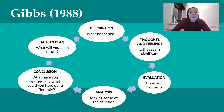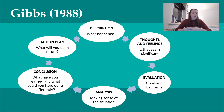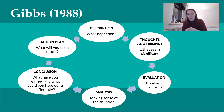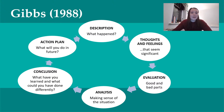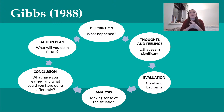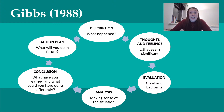Then you come on to evaluation: thinking about the good parts and the bad parts, what went well and what could be improved next time — a simple pros and cons list. Then analysis: making sense of the situation, thinking about why. Why did these things happen? Why were the good things good? Why did I feel the way I did? Then the conclusion: what have you learned and what could you have done differently? Finally, the action plan — what will you do in the future, what can you bring forward from this experience to do in future similar situations, and then next time you can go around the cycle again.